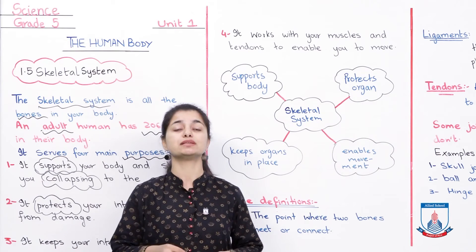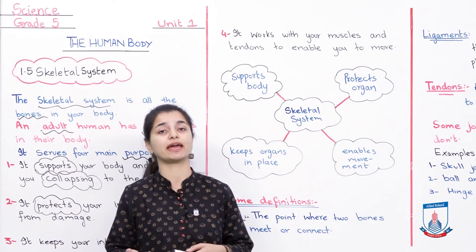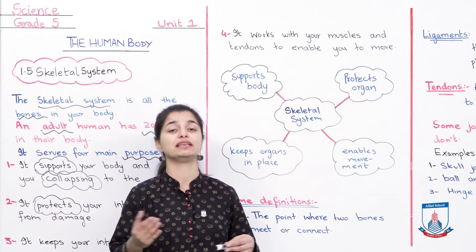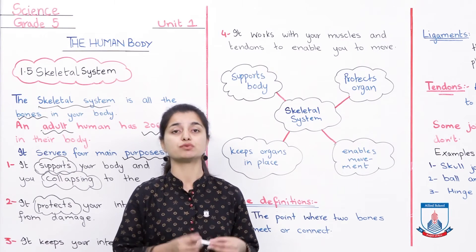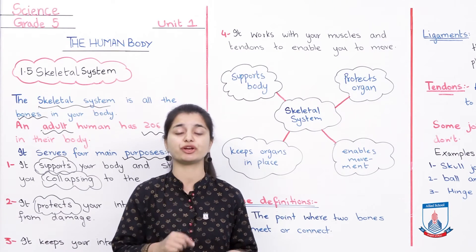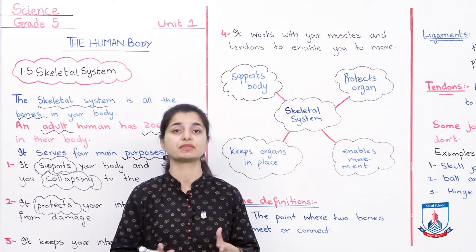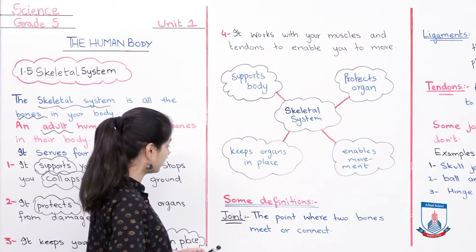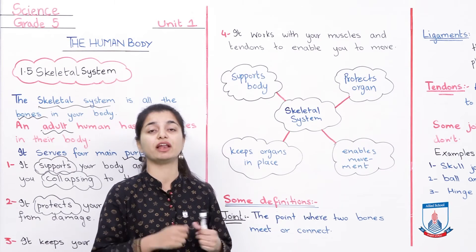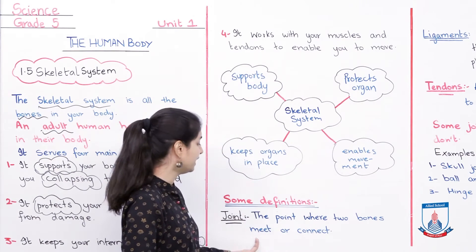Now when we talk about the skeletal system in more detail, we look at different terms and parts. Let's start with a few definitions — the terms we use specifically in the skeletal system. The first term is joint. What is a joint? It is the point where two bones meet and connect.